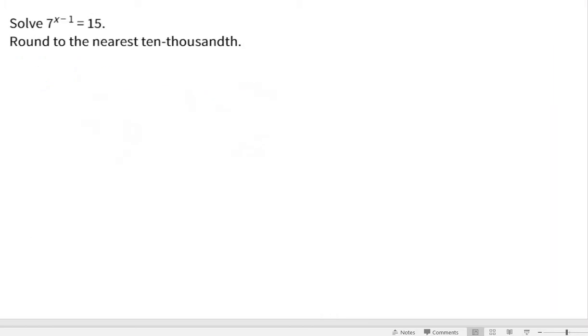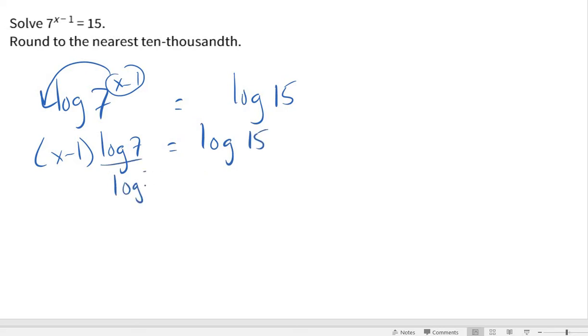Let's try another one. Now, very similar. We've just got a little bit more going on. So 7 to the x minus 1 equals 15. Notice I'm just spreading that out a little because I'm going to put a log in front of both of those. And then we're going to bring that exponent down. So I've got x minus 1 times log 7 equals log 15. Well, divide log 7 by both sides. So that's 1. Log 7 divided by log 7. Now, one more step. We've just got to add 1 over to get our x by itself.